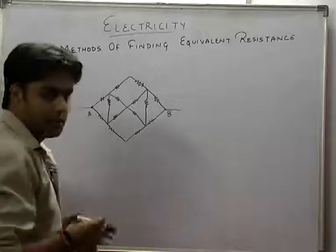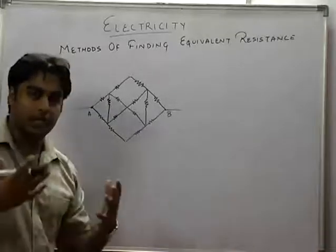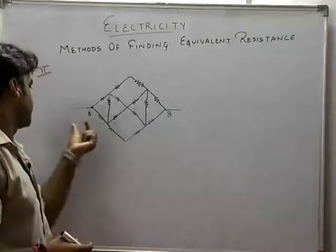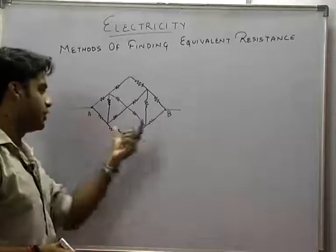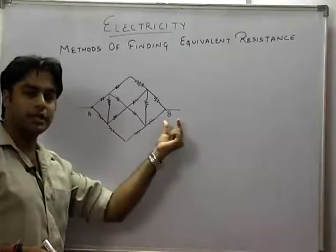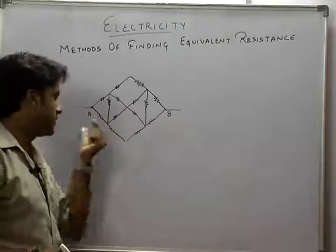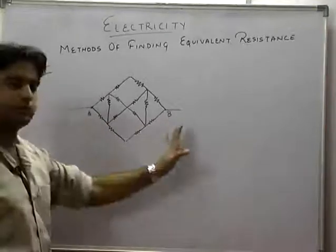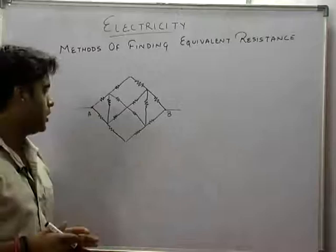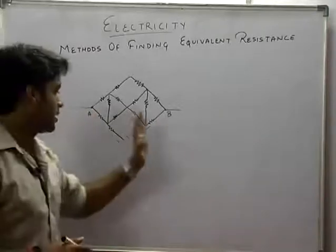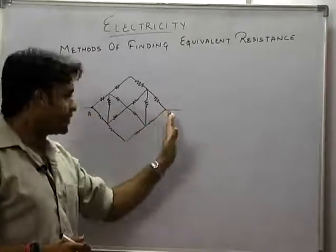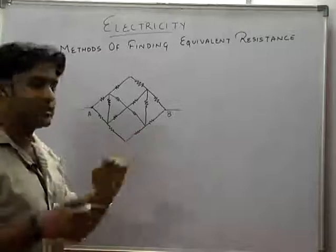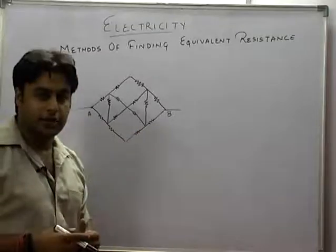Now we come to the second method. What the second method says is that if the initial — the line joining the initial and final points — yani agar A aur B ke beech mein nikalna ho — then if the line joining A and B is the axis of symmetry, then we can use this property to simplify the circuit.